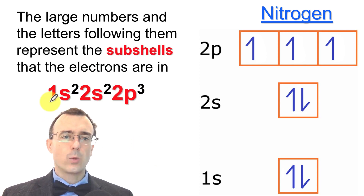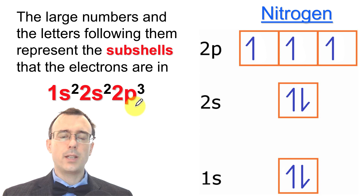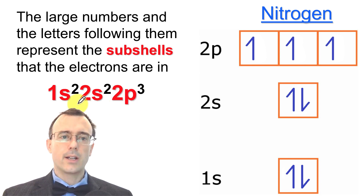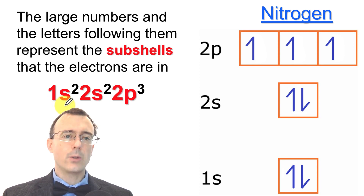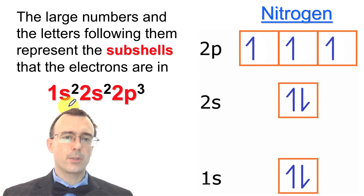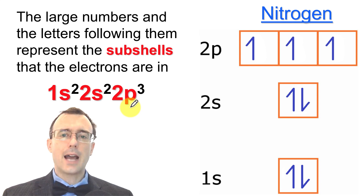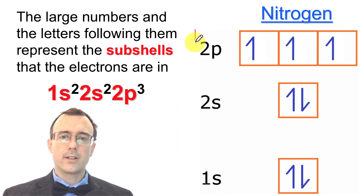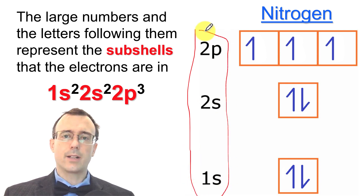First of all, we notice the 1s, the 2s, and the 2p. Those are all the different subshells. A large number and the letter together tell you the subshell — the 1s is the 1s subshell, the 2p is the 2p subshell. It's exactly the same information that you'll see on the left of your energy level diagram.